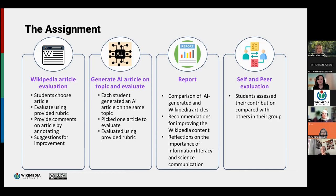After the introductory session, students chose an article from a provided list — all doing different articles. They then evaluated that article using a provided rubric, focused on readability. I got them to copy their Wikipedia article into a Word document, share it in their group, and use track changes and comments to make annotations on the article — noting sections that might need to be improved, things that were confusing or needed to be reworded.